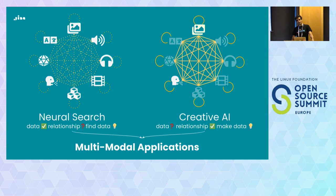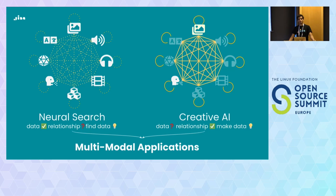I've introduced two concepts: Neural Search and Creative AI. I like to see them as two faces of the same coin, both falling under the scope of multimodal application. In Neural Search, you have the data but you don't have the relationship, and you find the data with the model's understanding. In Creative AI, you don't have the data but you do have the relationship, and you make the data. At the end, it's still a multimodal application.